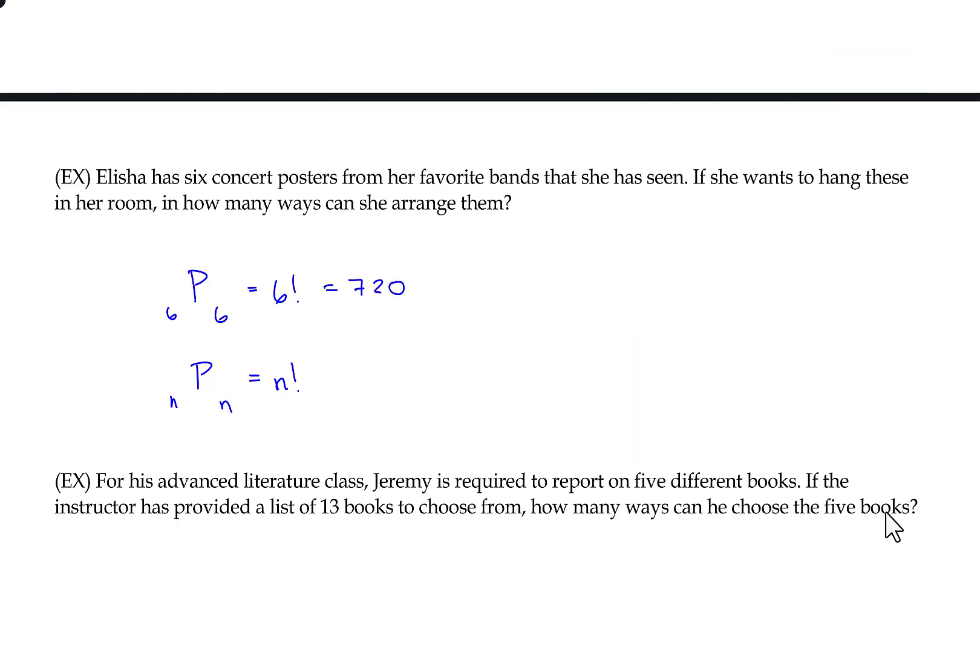You could also have done something like this. So she'll pick the first one. She has six choices to choose from. She hangs it and then there's only five choices to choose from. Hangs that one then there's four, three, two, and one. And that's where this factorial comes from. So lots of different ways you could solve that particular problem.